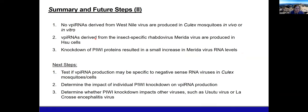In summary for part two: we did not detect any virus-derived piRNAs from West Nile virus in Culex mosquitoes in vitro or in vivo. We did detect piRNAs from the insect-specific rhabdovirus Merida virus, and knocking down different Piwi proteins resulted in a small increase in Merida virus RNA levels. Next steps are to test whether vpiRNA production may be specific to negative-sense RNA viruses in Culex, and to determine whether Piwi knockdown impacts other viruses such as Usutu virus or LaCrosse encephalitis virus.